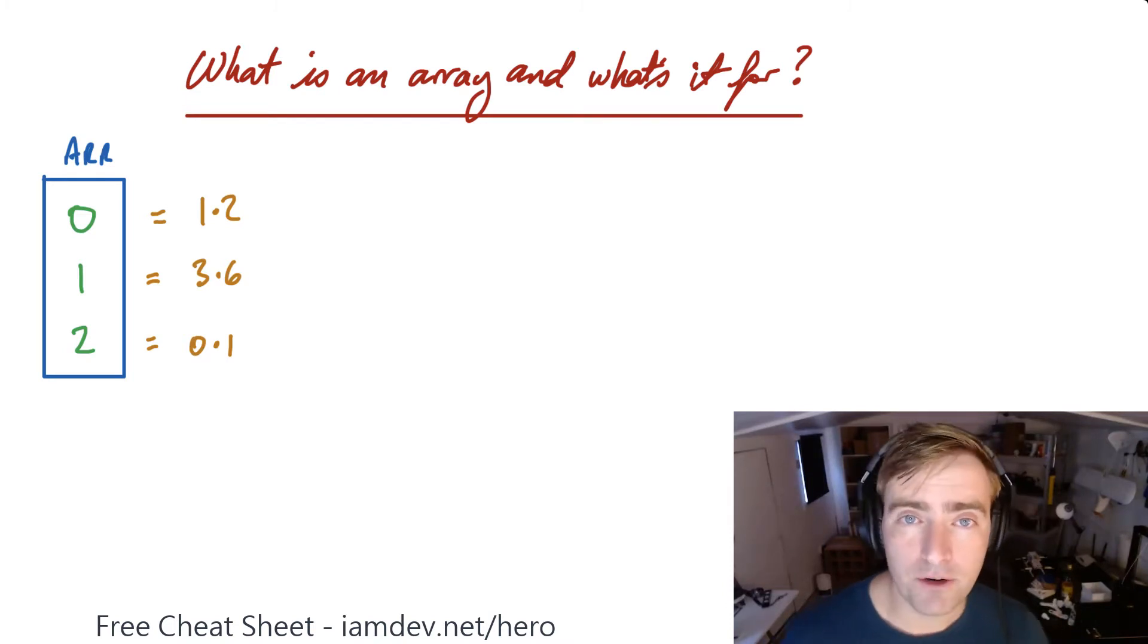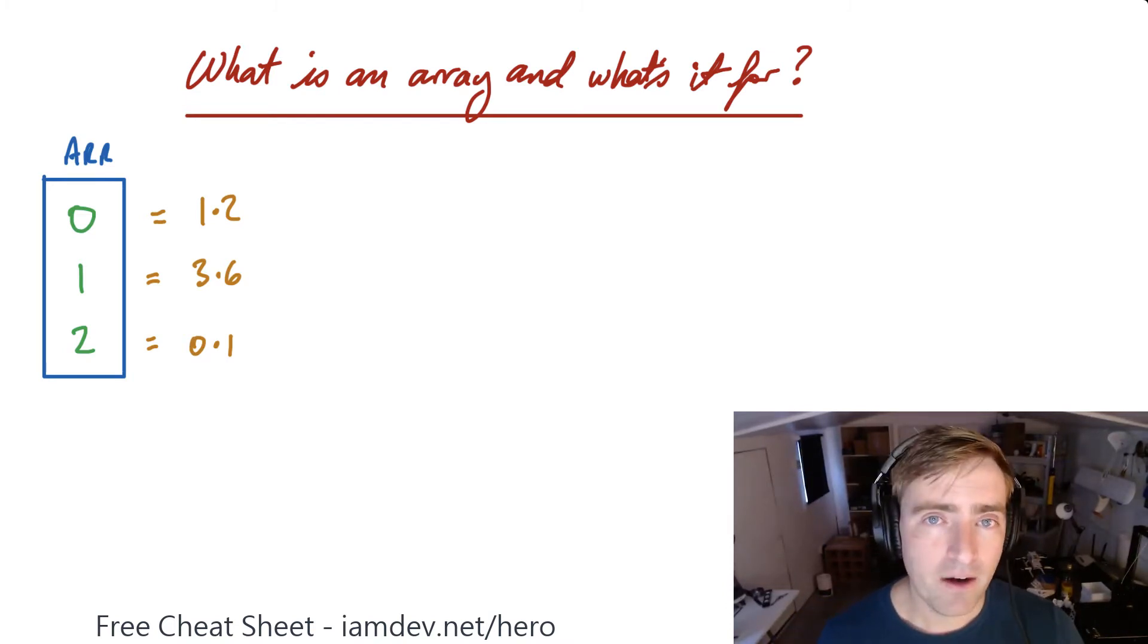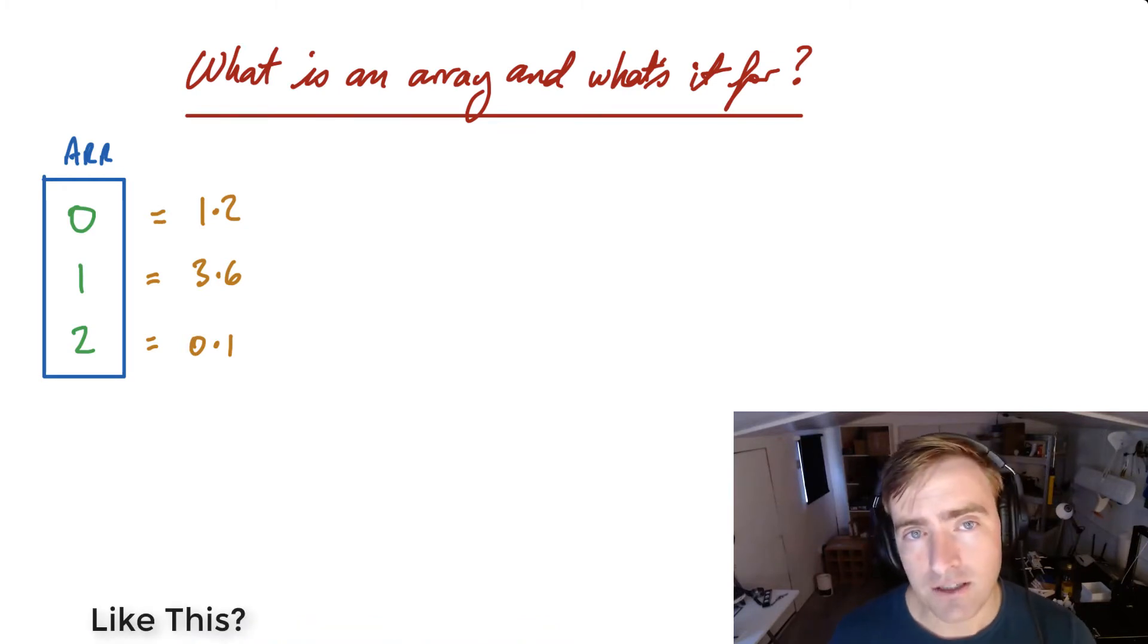Now the simple way to do that is to group them into an array. An array is simply a grouping of those variables that are all of one type, so in this case it's a float: 1.2, 3.6, 0.1. The pertinent features of an array is that it has variables stored in each location starting at location 0 and then progressing upwards: 0, 1, 2.